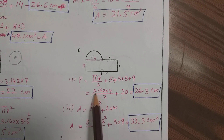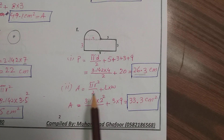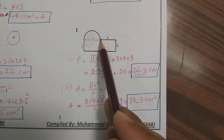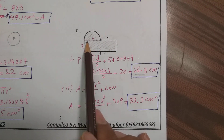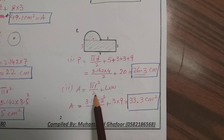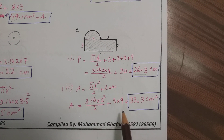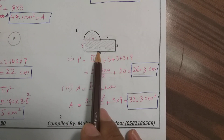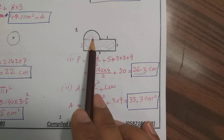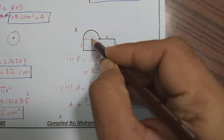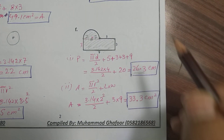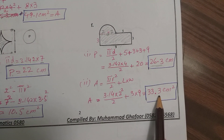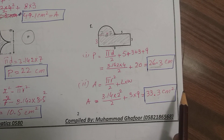Simplifying the perimeter of part f gives 26.3 centimeters. For the area, the shape is a semicircle plus a rectangular part. Area equals pi r squared divided by 2 for the semicircle, plus length times width for the rectangle. The rectangle is 3 times 9, and the radius is found by dividing the diameter by 2. Simplifying gives the total area as 33.3 centimeters squared.